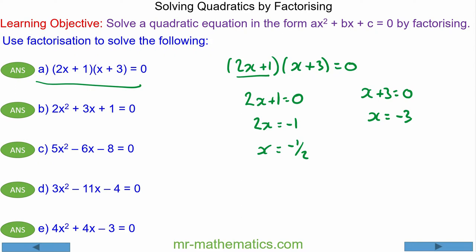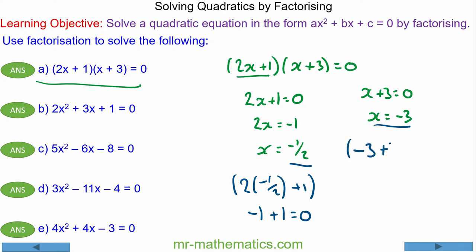We can check that this works. If we put negative one half into the original bracket: 2 lots of negative one half plus 1 — 2 lots of negative one half is minus 1, plus 1 makes 0. Similarly, if we put negative 3 into the second bracket, negative 3 plus 3 equals 0. So the solutions are x equals negative one half and x equals negative 3.